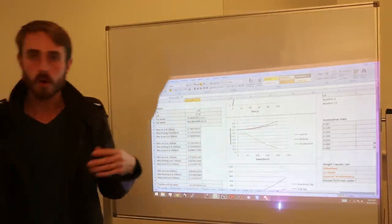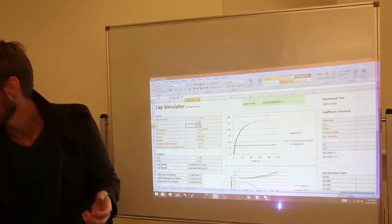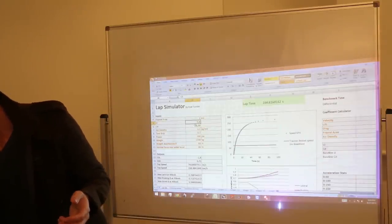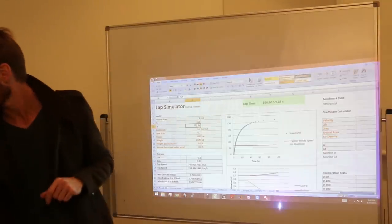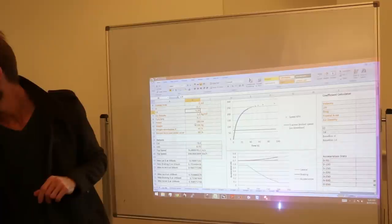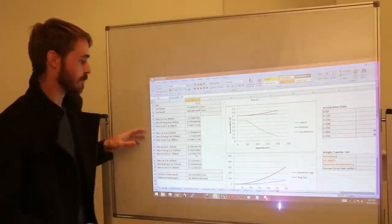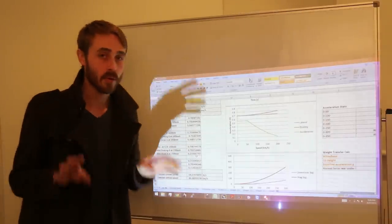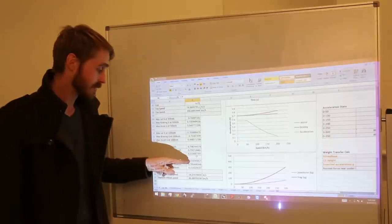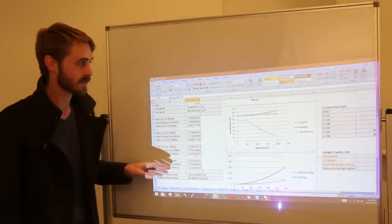If we look at more of what a WRX would actually be making in terms of downforce, which is probably closer to the sort of negative 0.1 mark optimistically, we can see that the total difference in G of what you can corner at, at 200 k's an hour, so this is cornering, is 0.01 of a G is the only difference.